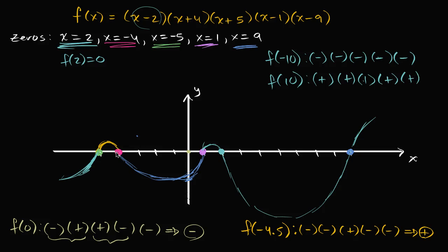The key realization is that the zeros are the only places that are going to intercept the x-axis, and between those zeros, if you are positive at one point in that interval you're going to be positive at any point in that interval. So if someone were to ask the sign of f on the interval negative four less than x less than one — that's the interval we started off with — you'd say f is always negative on this interval, since we don't include the endpoints.